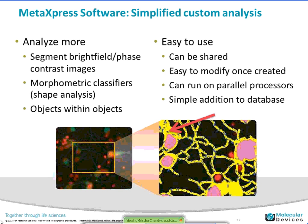With the new version of MetaExpress, there is the ability to generate custom modules. This allows you to analyze bright-field and phase contrast images, do some morphometric classifiers, and create modules that allow you to do things like finding objects inside objects. In this example, we're looking for puncta inside neurons or near the cell body, and those little blue dots are being found along those neurons. Once a custom module is created, it can be shared, it's easy to modify, and it can be run with MetaExpress PowerCore for parallel processing. Once created, these settings can be added to the database.